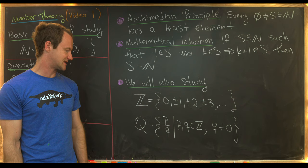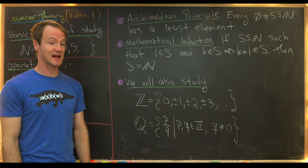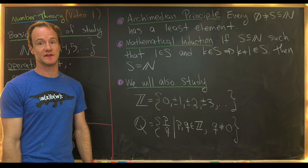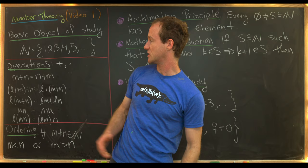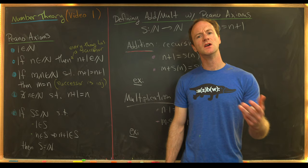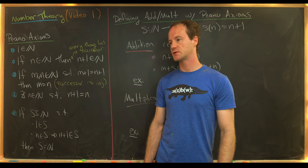Now that we've got these well-known objects and facts out of the way, let's jump into our main goal of this first video, which is to look at the Peano axioms and show that addition and multiplication in the natural numbers satisfies these axioms. We want to look at a more formal approach to the natural numbers called the Peano axioms.